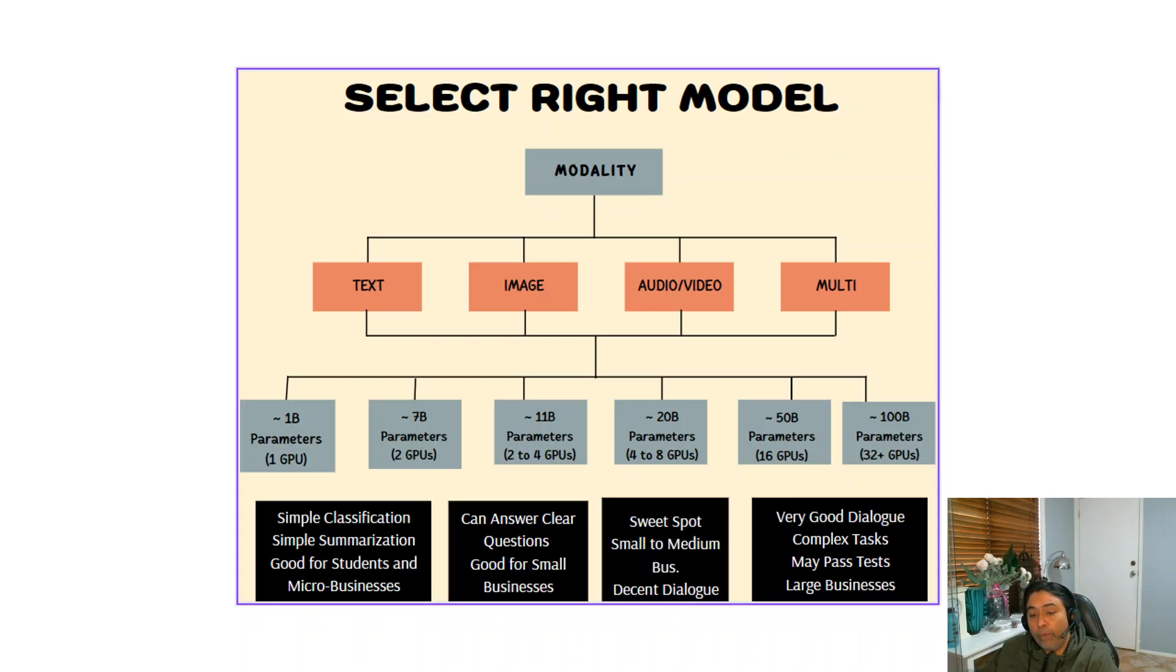And like 32 plus GPU models, the 100 billion parameter model - these models may pass test tasks and tests. Like you might be hearing in the news that a few of the GPT-4 models or similar models have passed the US law tests and various other tests, SAT tests. So these are the models which are 100 plus billion parameters which can do this.